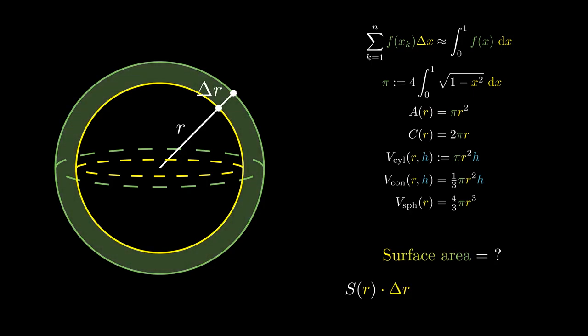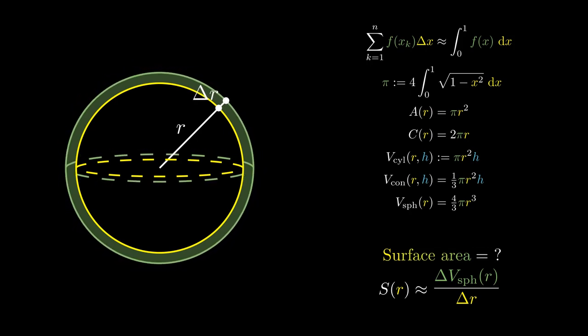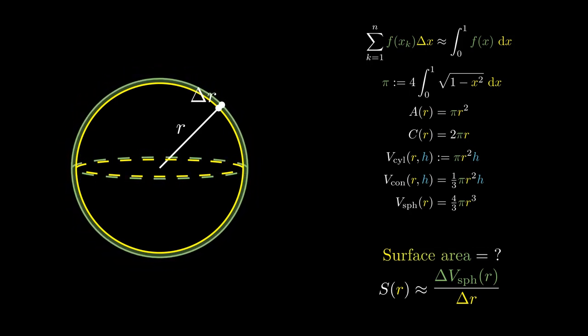This approximates the change in the volume. Dividing out the change in r, we obtain an approximation for the surface area. As we let the change in r approach zero, we're going to obtain the actual surface area.